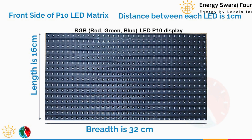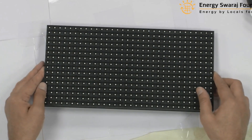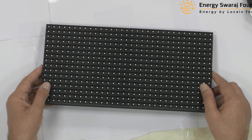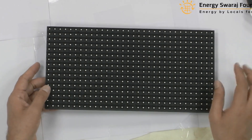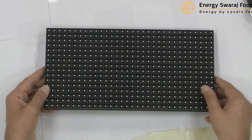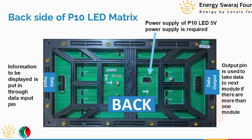This is the front side of the display. What we are going to use in our climate clock is what I'm holding in my hands — a 16x32 P10 RGB display. Now let me show you the back side, which is very important to examine.